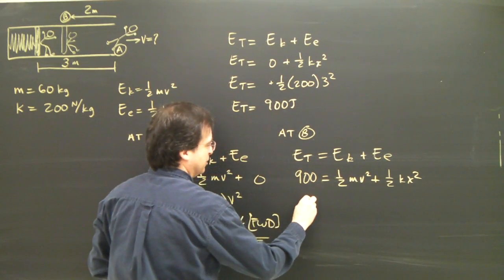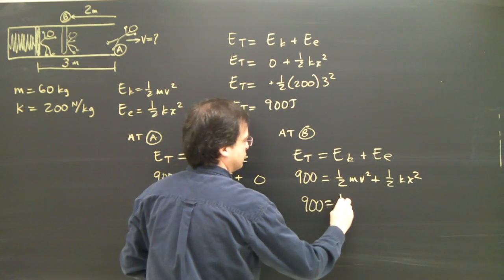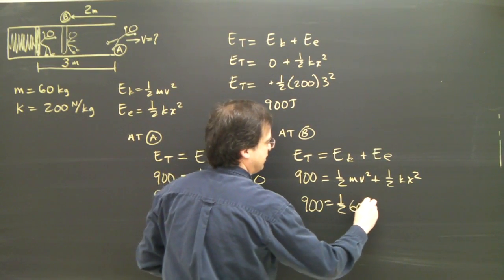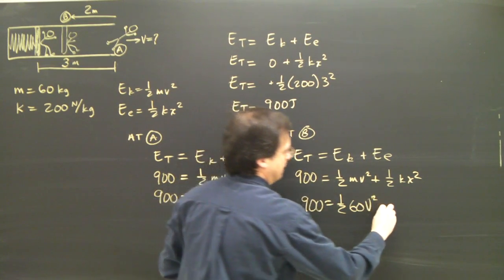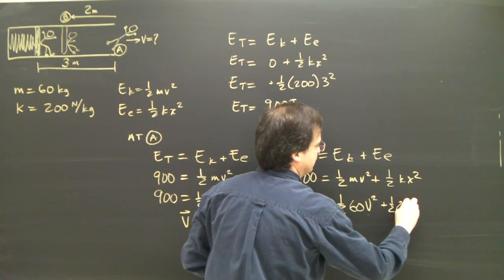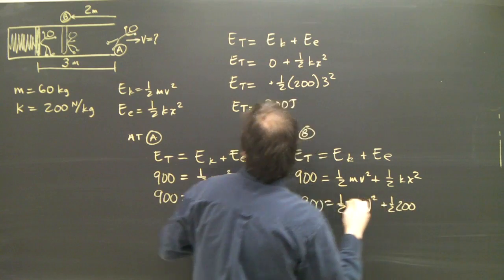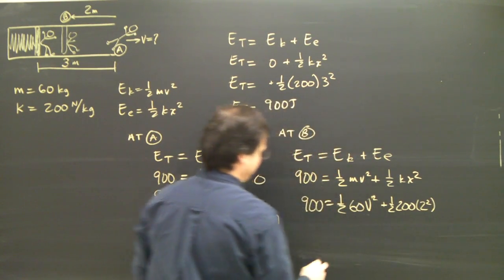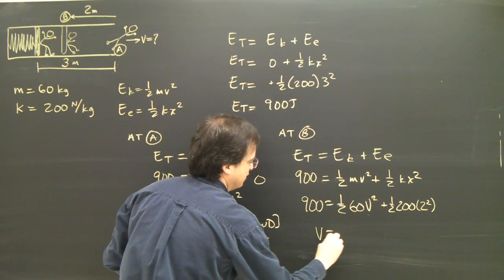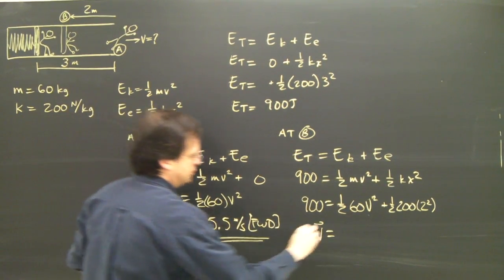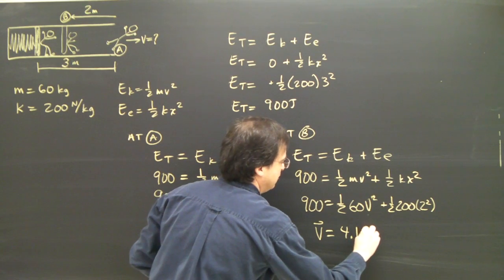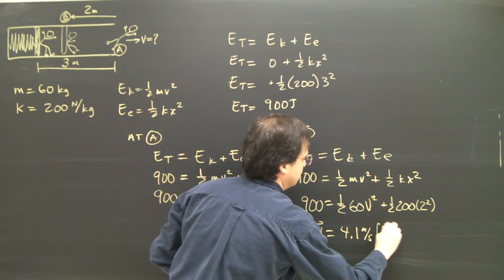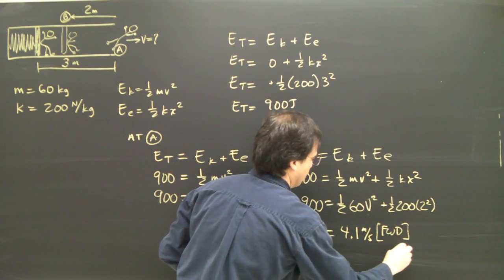So I plug in my numbers. 900 equals one half times 60 v squared. This is what I'm looking for. Plus one half times 200 times x squared is 2 squared. I solve and I get the velocity there is 4.1 meters per second forward.